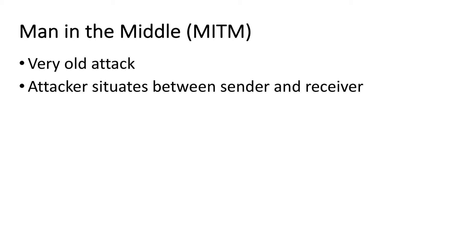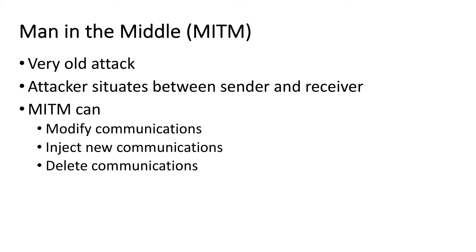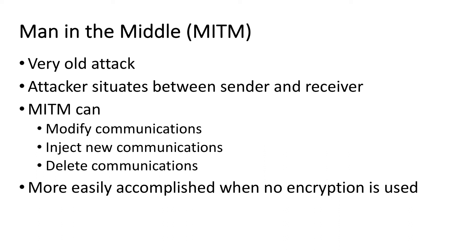Now let's look at a man-in-the-middle attack. This is a very old attack that's been around as long as there have been computers and networks. The attack occurs when the attacker is able to get in between the sender and receiver — that is, two computing devices on a particular network. A man-in-the-middle attack can cause damage because the attacker can modify communications, inject new false traffic, or delete traffic going between the senders and receivers. This is more easily accomplished when there's no encryption being used.